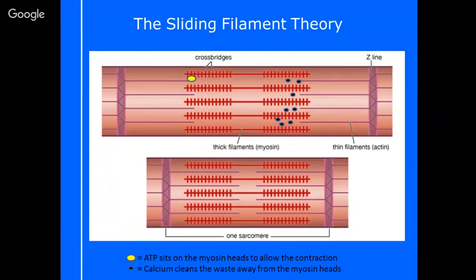The sarcomere is made up of actin and myosin. Myosin are the thick proteins, actin are the thin ones, and it just literally expands and contracts. What allows that to happen is what happens at the cross bridges. A cross bridge is highlighted at the very top of this image, and you can see a little yellow dot there on the myosin heads—that's where ATP sits, and that's adenosine triphosphate. That's our currency for energy.